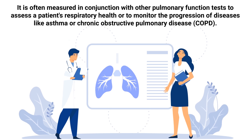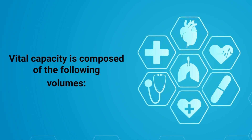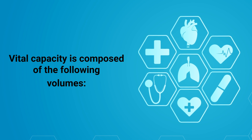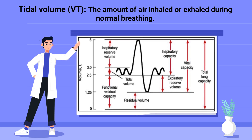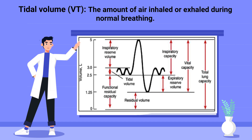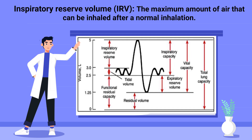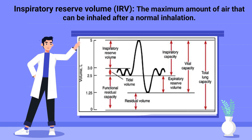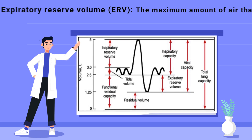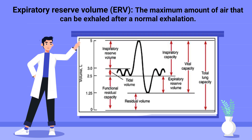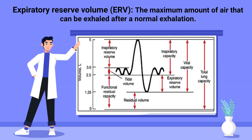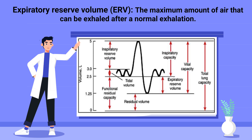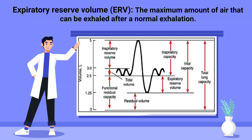Vital capacity is composed of the following volumes: tidal volume, which is the amount of air inhaled or exhaled during normal breathing; inspiratory reserve volume, which is the maximum amount of air that can be inhaled after a normal inhalation; and expiratory reserve volume, which is the maximum amount of air that can be exhaled after a normal exhalation.